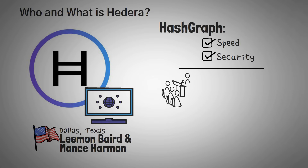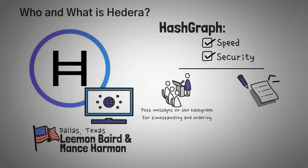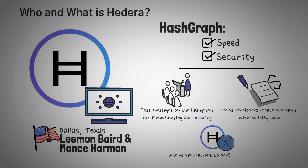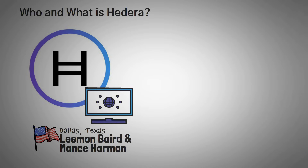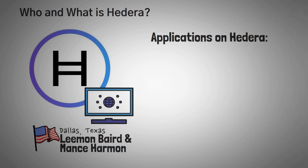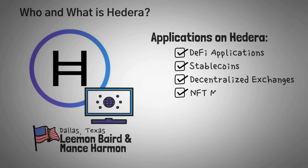Hedera offers three main services. First, the consensus service, used to post messages on the Hashgraph for timestamping and ordering. Second, the smart contract service, which helps developers create programs with Solidity code. Third, they have a token service, which allows applications to perform transactions. Anyone can access these services without needing to host a node. One thing to like about Hedera is that there are already hundreds of applications running on it, including DeFi applications, stablecoins, decentralized exchanges, NFT marketplaces, and even some games.